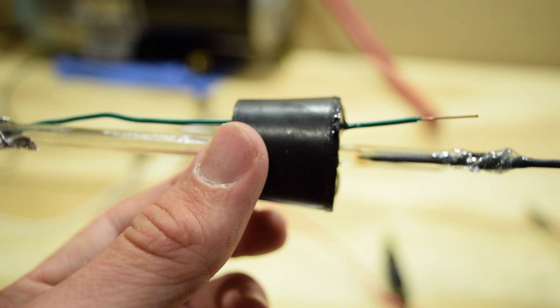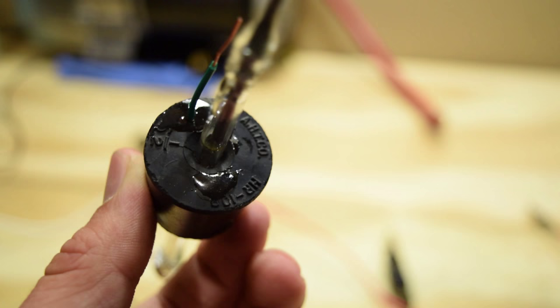The cathode is just a nail that has been melted into the end of the glass tube. It is all sealed with a lot of epoxy to make sure it's vacuum-tight.